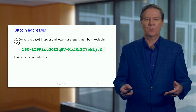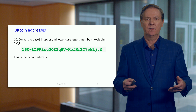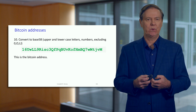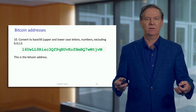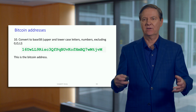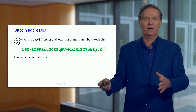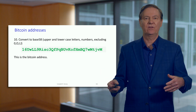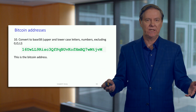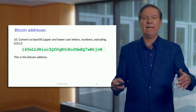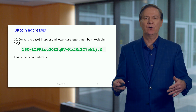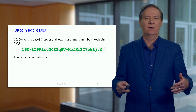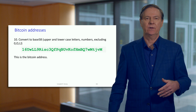Ethereum is much more straightforward: take the public key, apply KECCAK-256, take the last 40 hexadecimal characters, apply the 0x prefix, and you're done. Bitcoin has many more steps, but again it's very mechanical and very fast to actually perform.